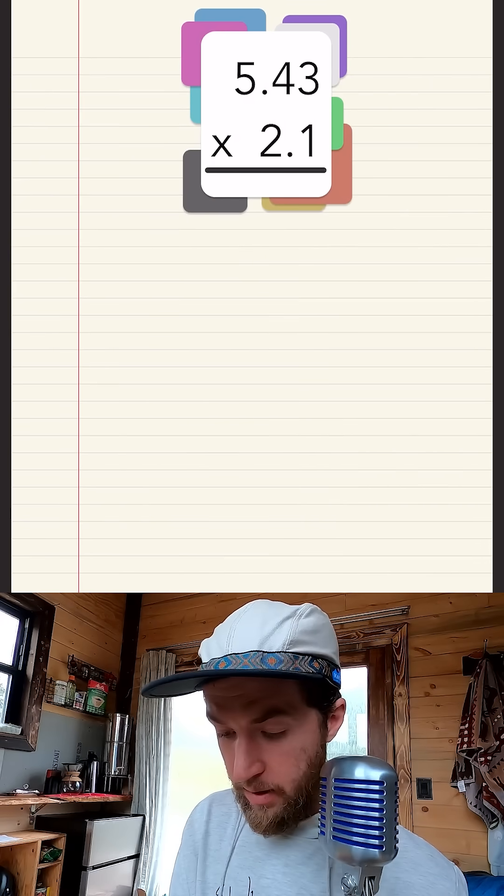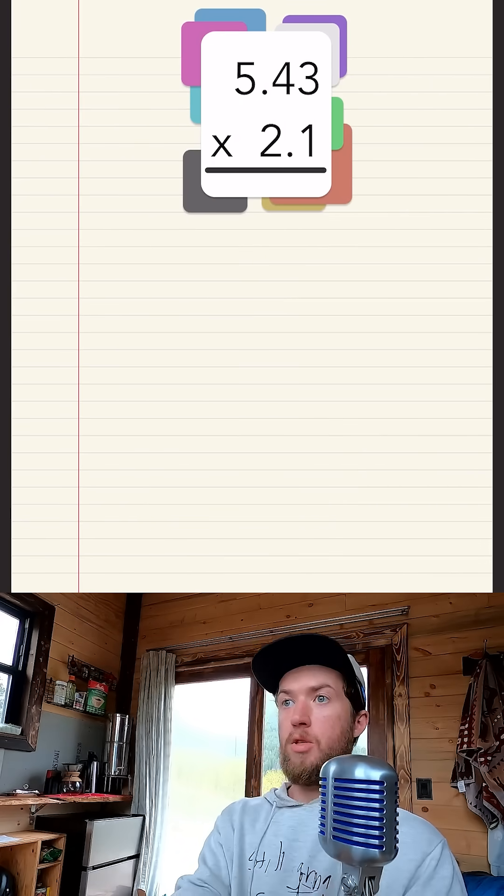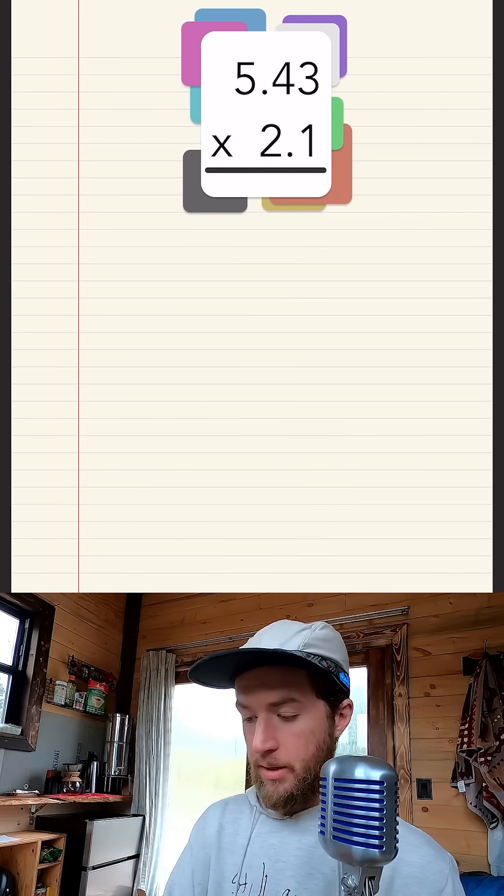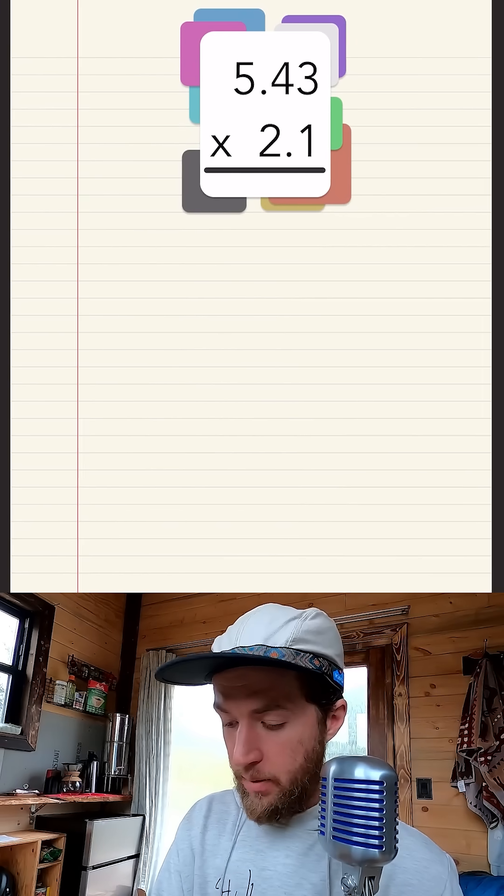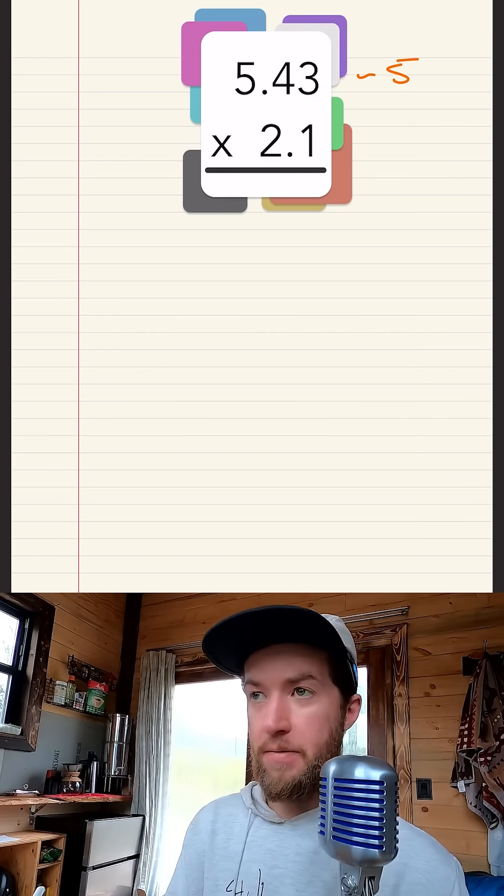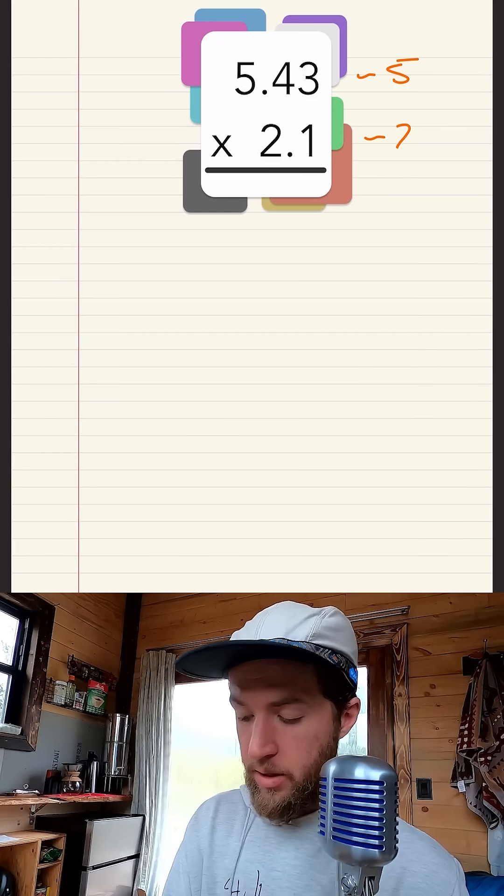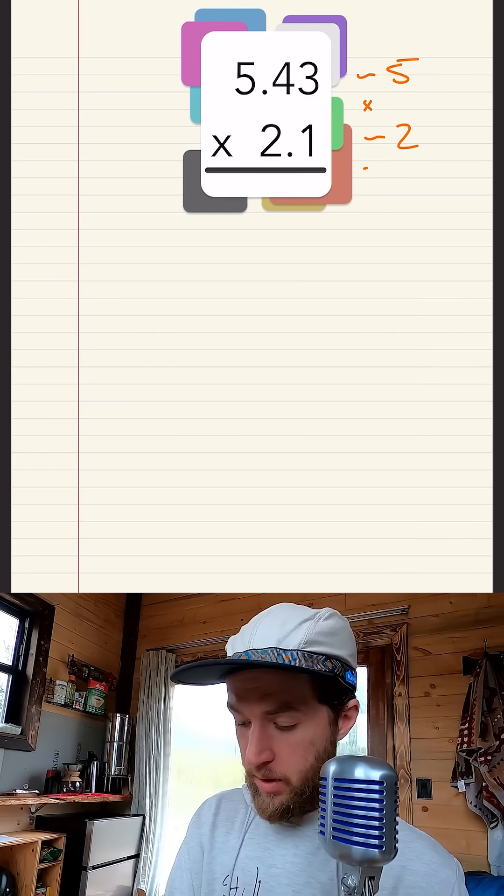All right, so we've got 5.43 times 2.1. Now seems like big crazy numbers, but first of all I'll just underestimate this at 5 and I'll just underestimate this at 2. What's 5 times 2? 10.